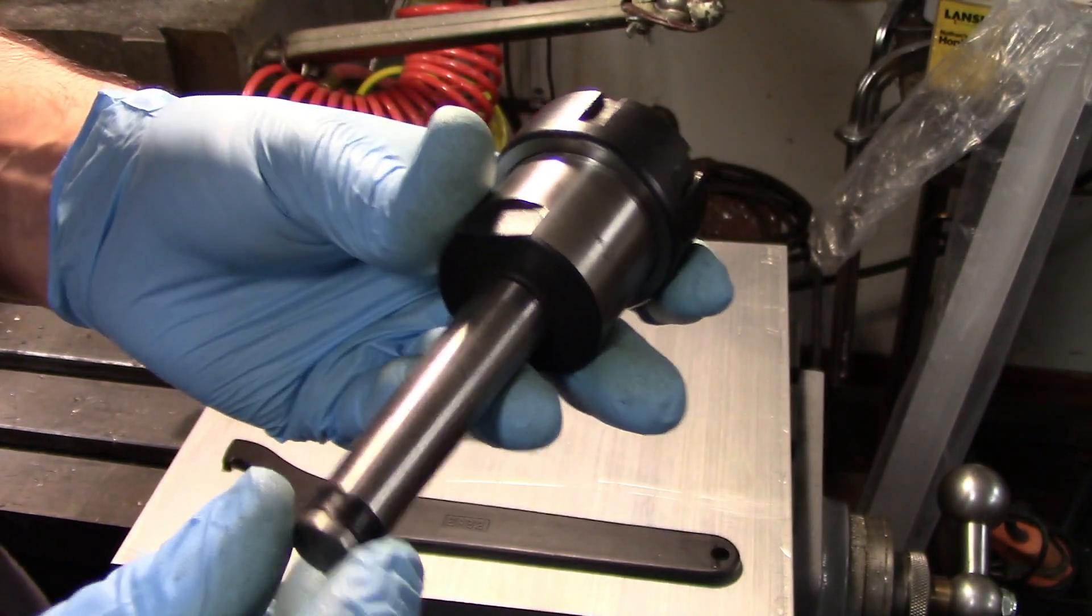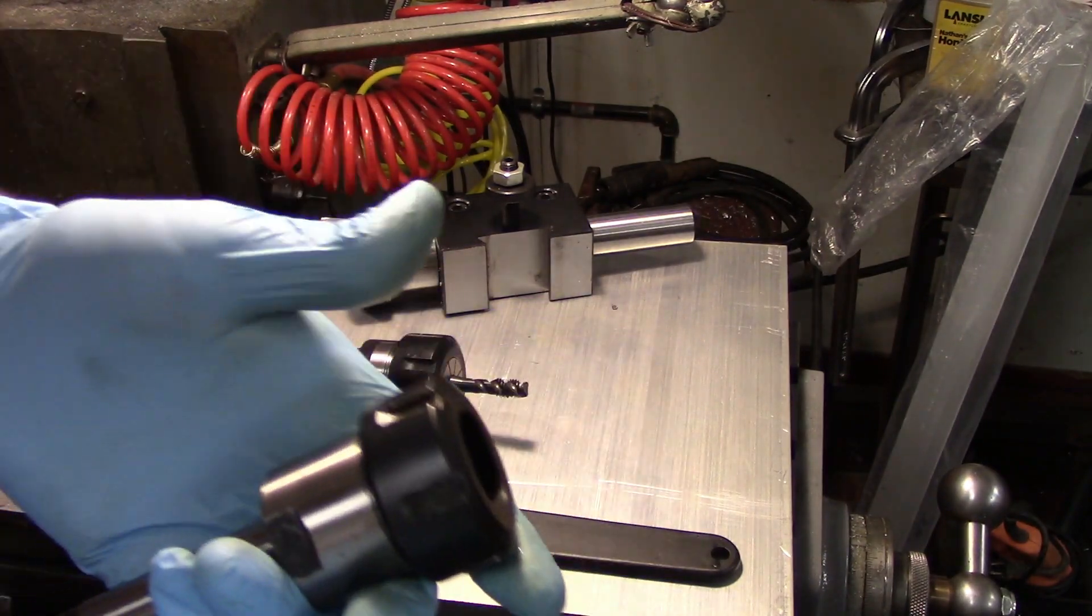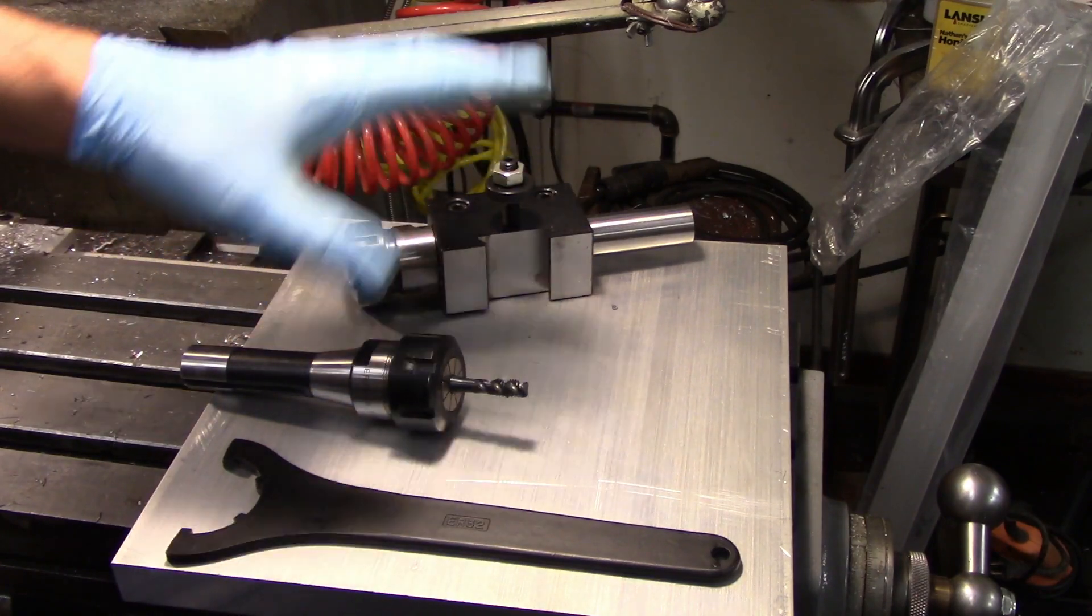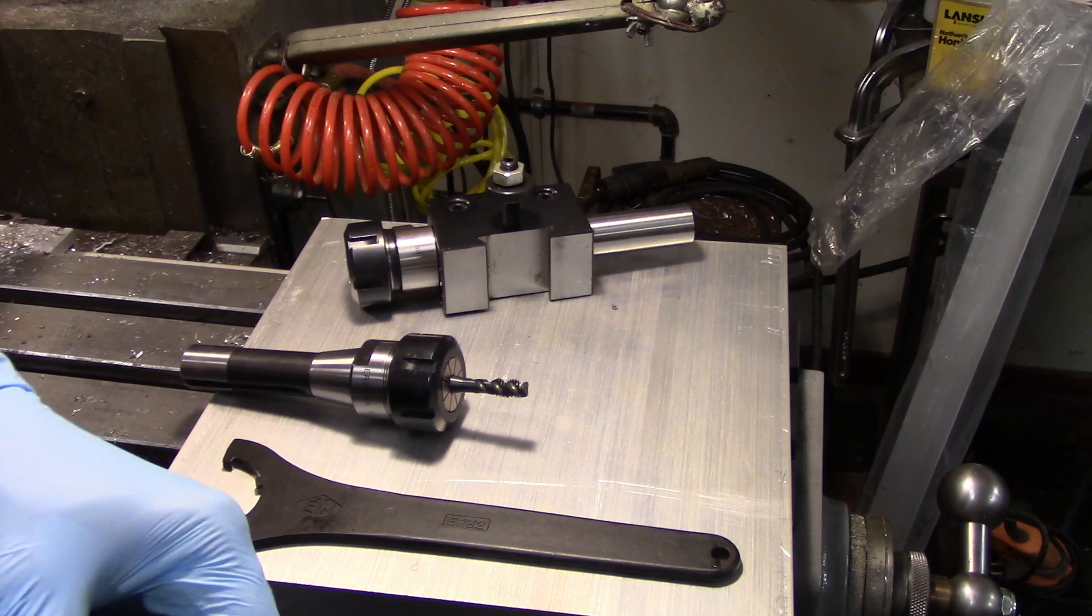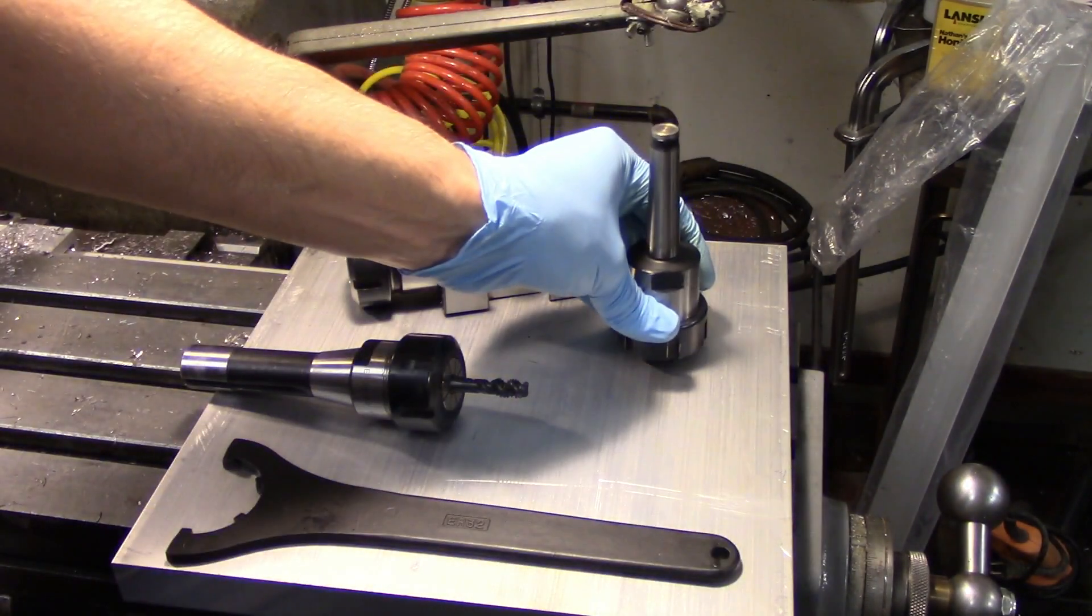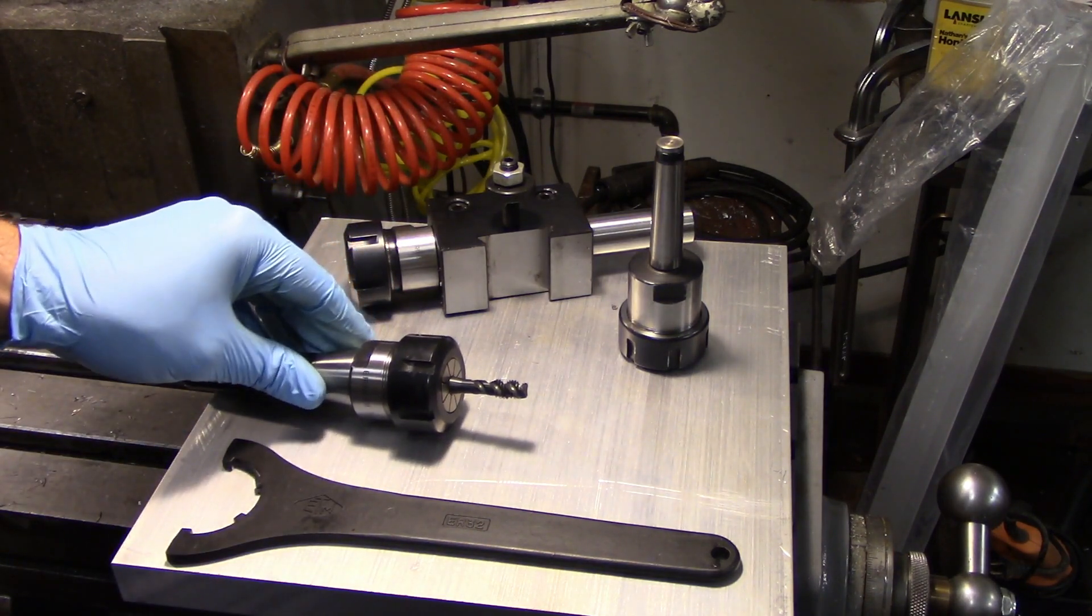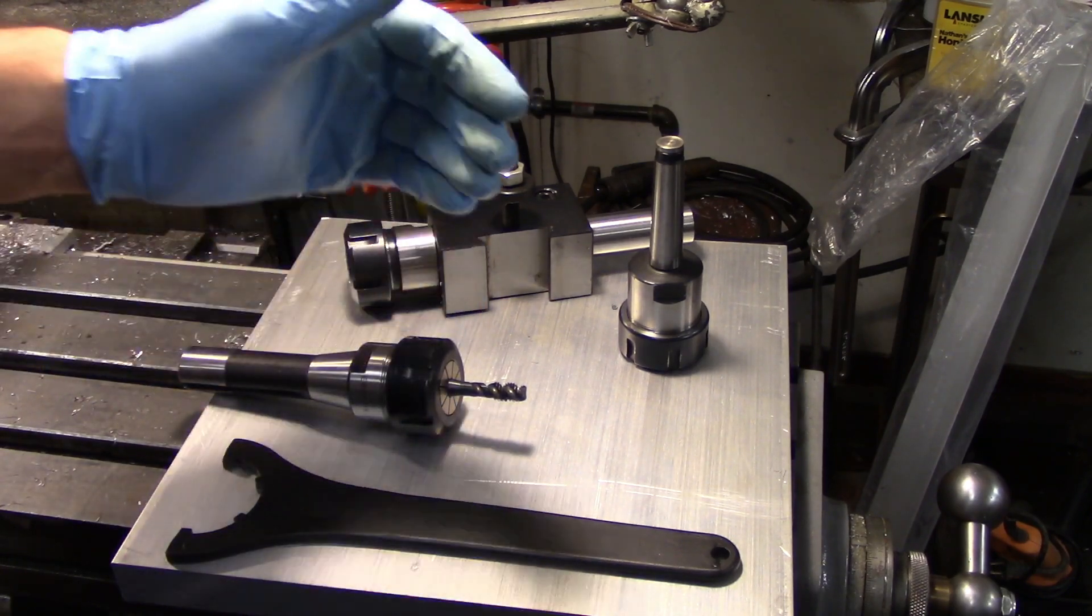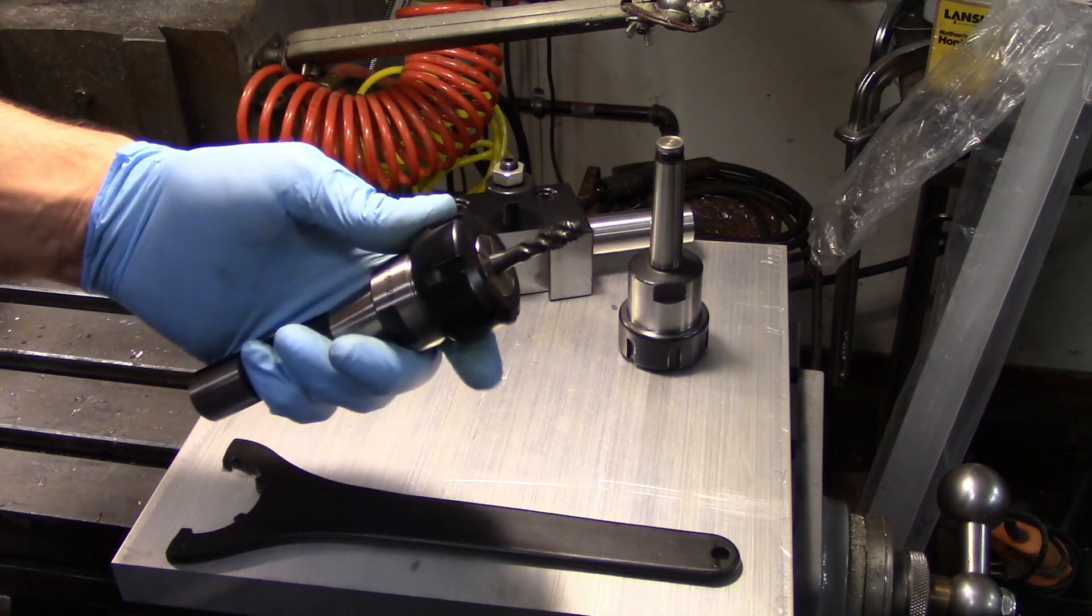I believe these are available with shanks as well but I don't think I could find one at the time. It takes the exact same collet as my other ones. Basically the first collet chuck that I bought was an ER32, so every collet chuck that I've bought since has also been an ER32 just to match so I don't have to buy an entirely new set of collets. There are a lot of different sizes. They have very small ones like ER16 and there's ER20.